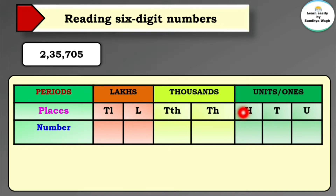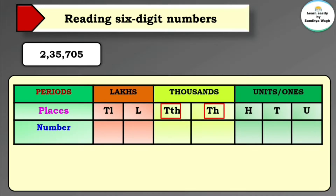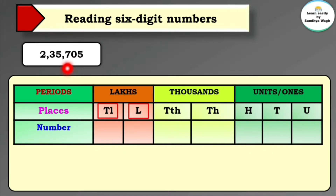The places are given along with their periods. Hundreds, tens, and units are in the units period. Ten thousands and thousands are in the thousands period. Ten lakhs and lakhs are in the lakhs period. When reading any number, we read according to these periods. If you observe the number carefully, you'll see commas after the units place, hundreds place, and again after the ten thousands place — these commas show the periods.